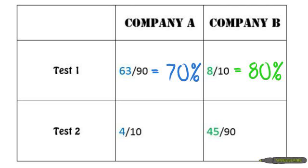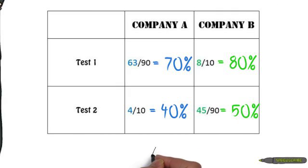On the second testing day, Company A cured 4 out of 10 people, giving it a 40% success rate, and Company B, 45 out of 90, giving it a 50% success rate. You decide to choose Company B because it had a better success rate on both days,